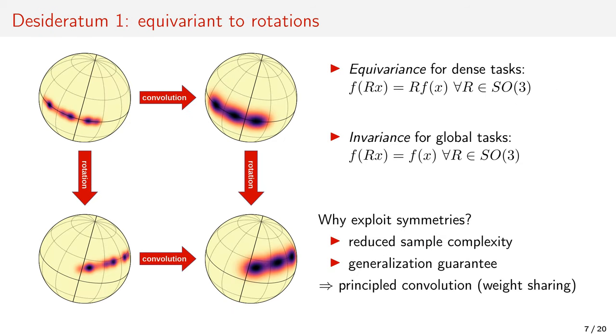The first desideratum for spherical convolutions or spherical neural networks is to respect the symmetries of the domain. For the sphere, those are three-dimensional rotations. We want convolutions to be equivariant to rotation, meaning that the convolution and rotation operators must commute.